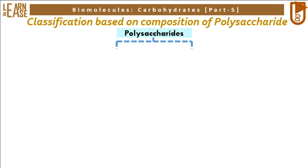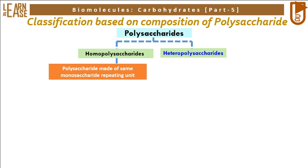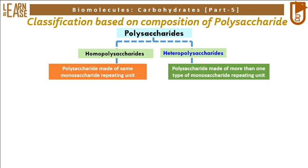Classification based on composition divides polysaccharides into two groups: homopolysaccharides and heteropolysaccharides. Homopolysaccharides are polysaccharides made of the same monosaccharide repeating unit, and heteropolysaccharides are polysaccharides made of more than one type of monosaccharide repeating unit.